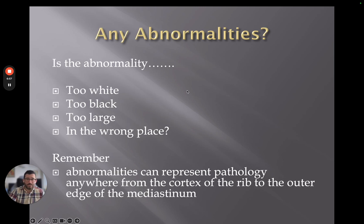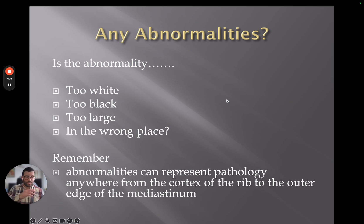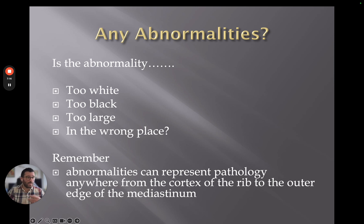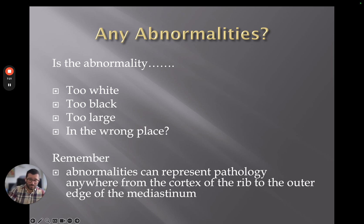In summary, the key question is: what is the abnormality? Have we got too much white, too much black, is something too big or too small, or is it in the wrong place? Abnormalities can represent pathology anywhere from the cortex of a rib to the mediastinum, but we also need to ensure we're not misinterpreting differences in technique as pathology — such as with kyphosis, lordosis, or an AP projection.